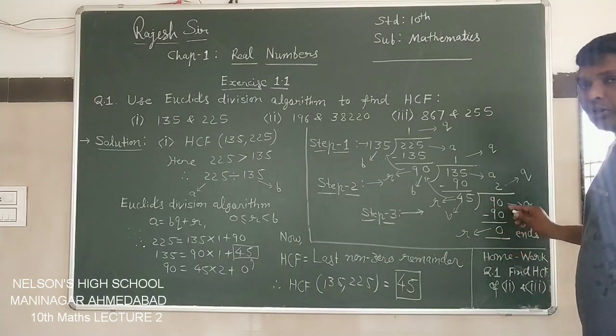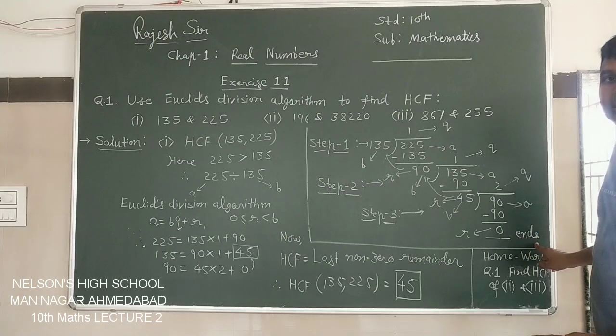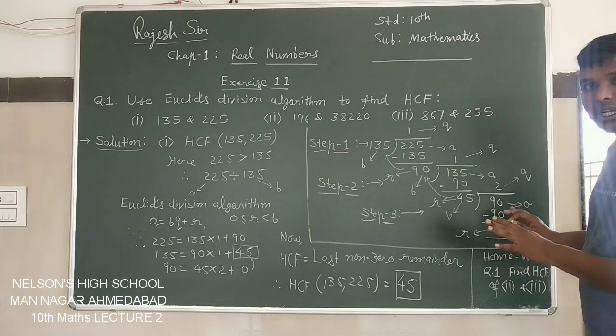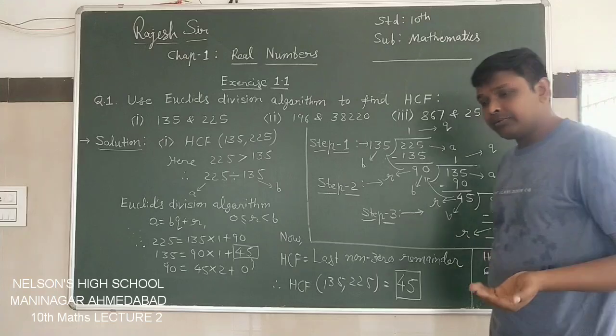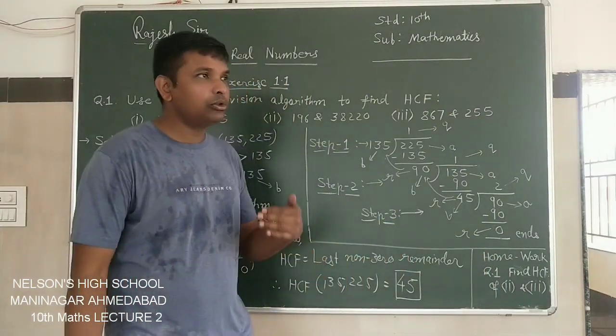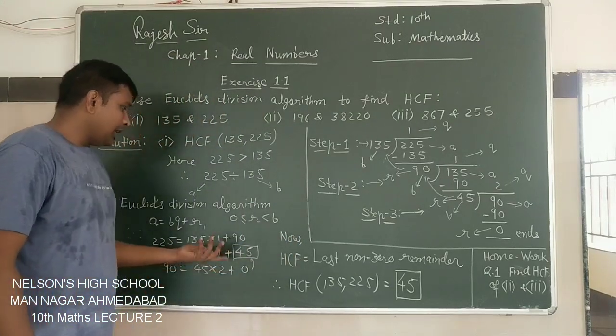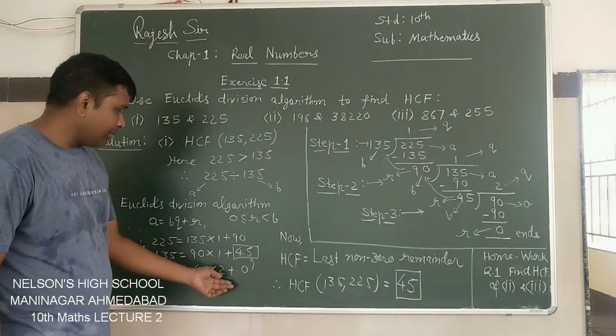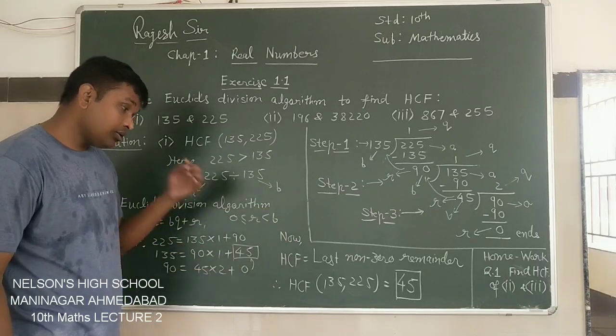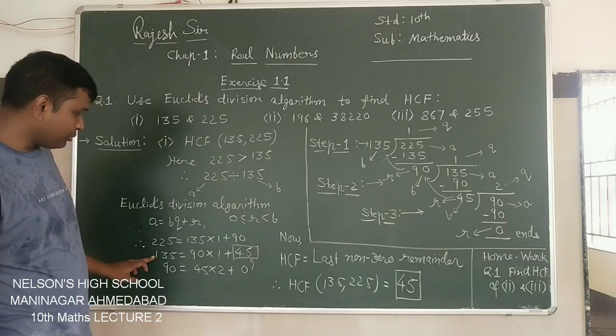So this is the remainder, 2 is quotient we say is Q. The third step we will write here: A equals 90 equals B is 45 into Q is 2 plus R is 0. In this step we got remainder as 0. Here the steps end. All steps end here.